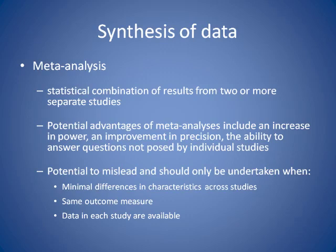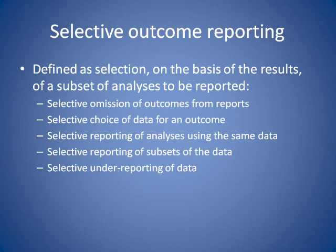Moving to the third section — synthesis of data — I'm focusing on meta-analysis, the statistical combination of results from two or more studies. The advantage is increased power and precision around our estimate of effect, giving us the ability to answer questions not posed by individual studies. The problem is that people quite often do meta-analysis when they shouldn't — when studies are too heterogeneous to pool, or when they're not measuring the same outcome, or where you don't have the data. It's these last two that cause many problems and lead to selective outcome reporting or outcome reporting bias.